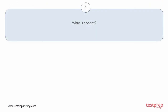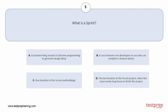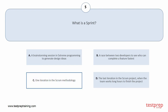Question number 5: What is a sprint? Your options are: A, a brainstorming session in extreme programming to generate design ideas; B, a race between two developers to see who can complete a feature fastest; C, one iteration in the scrum methodology; D, the last iteration in the scrum project when the team works long hours to finish the project. The correct answer is option C.